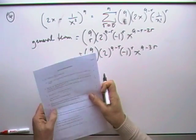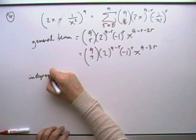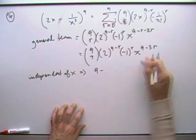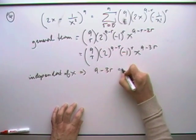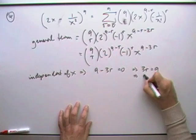Now it asked for the term which was independent of x. So independent of x means that the power has to be 0, which means that 3r has to equal 9, which means that r would be 3.